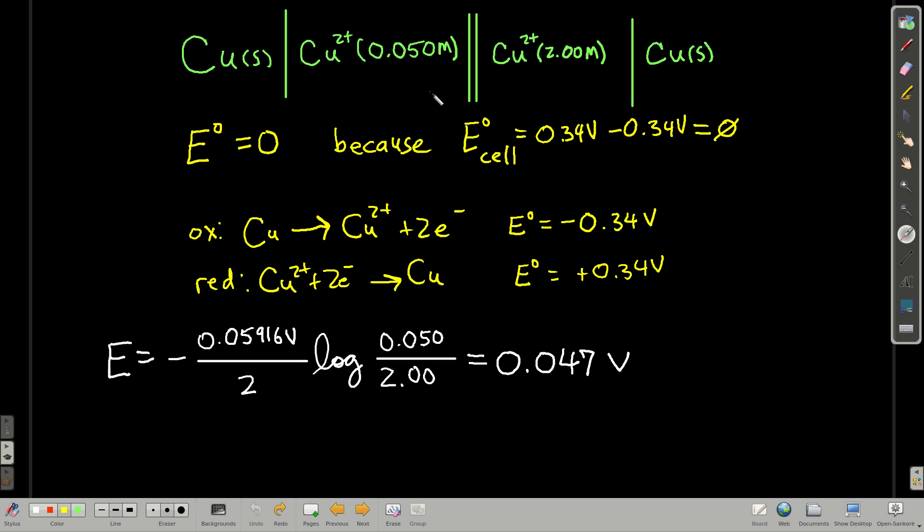because that's always where the oxidation is going to happen. Also, in a concentration cell, E0 is always zero. Why? Because for the cell,